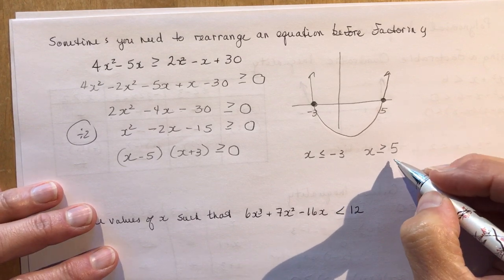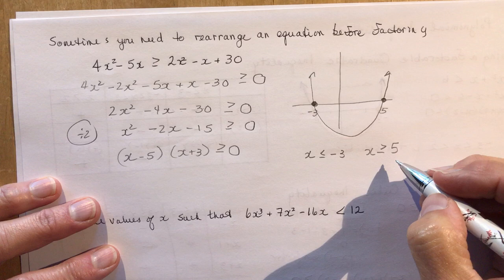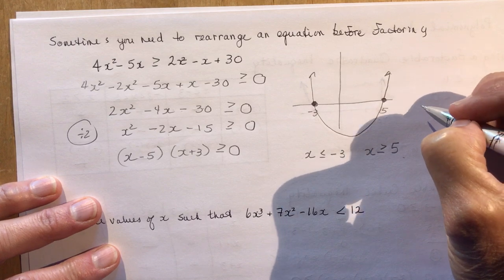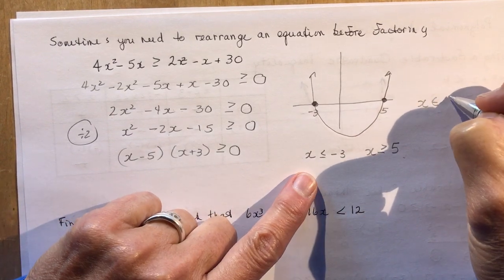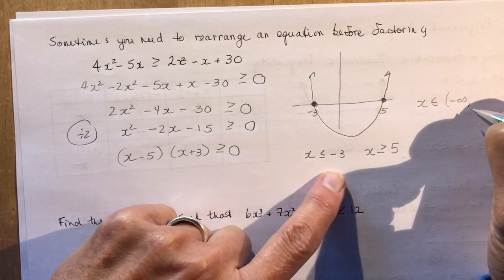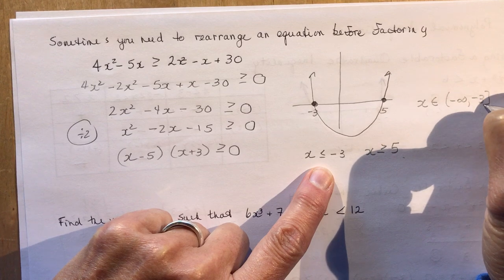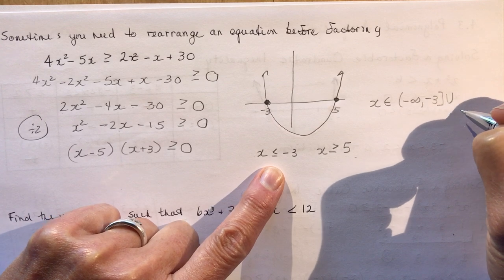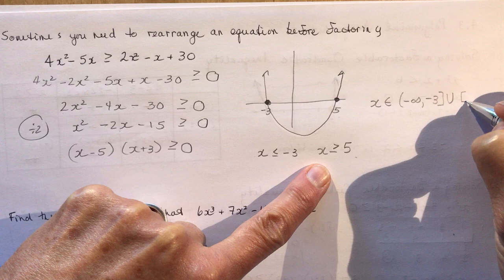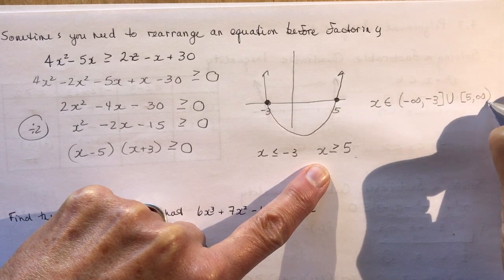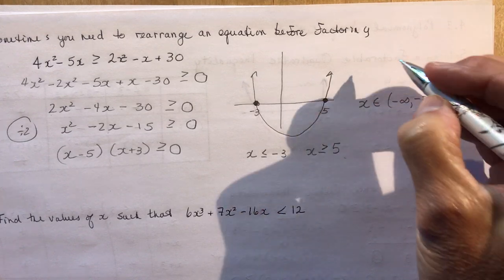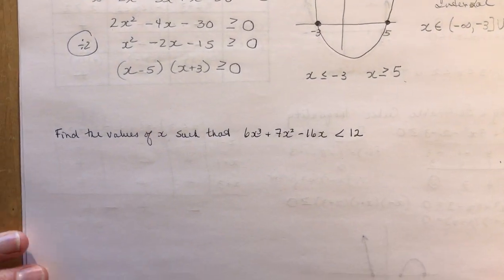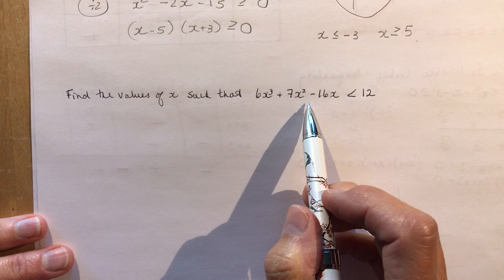Let's cover the different types of notation. In set notation you'd write the conditions on x directly. In interval notation, x ≤ −3 becomes (−∞, −3], then you write a union symbol ∪, and x ≥ 5 becomes [5, +∞). The square bracket means the endpoint is included and the round bracket means it is not.